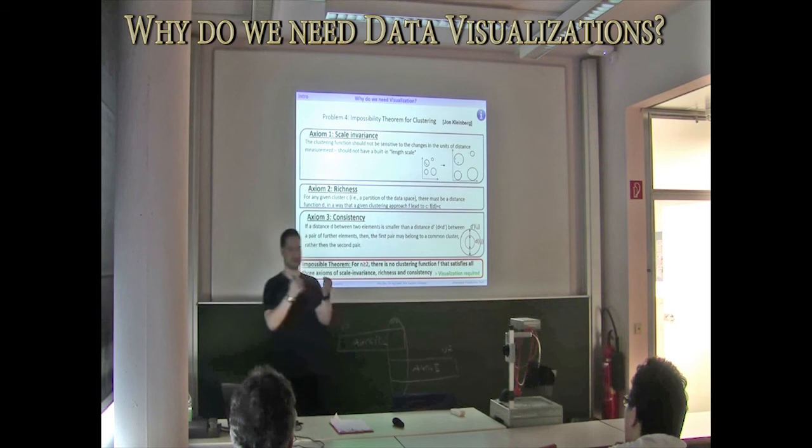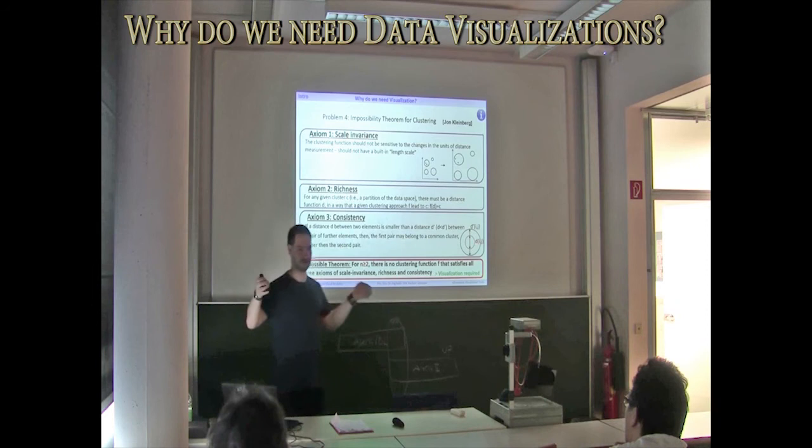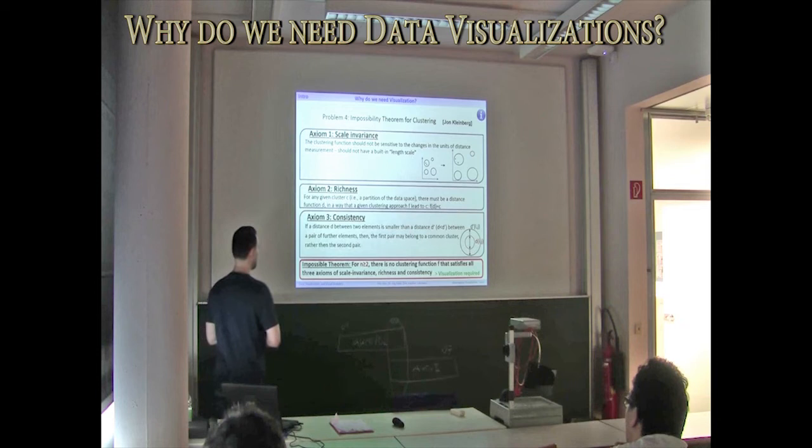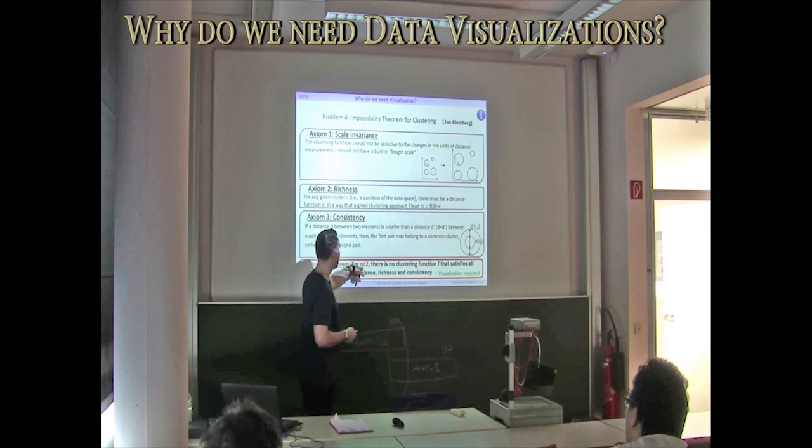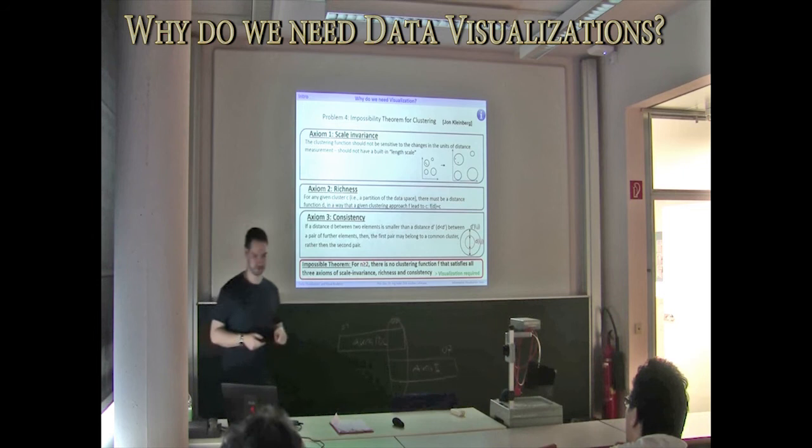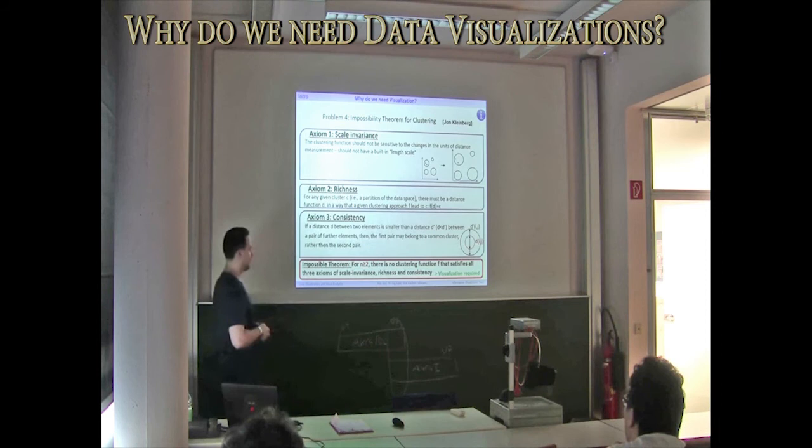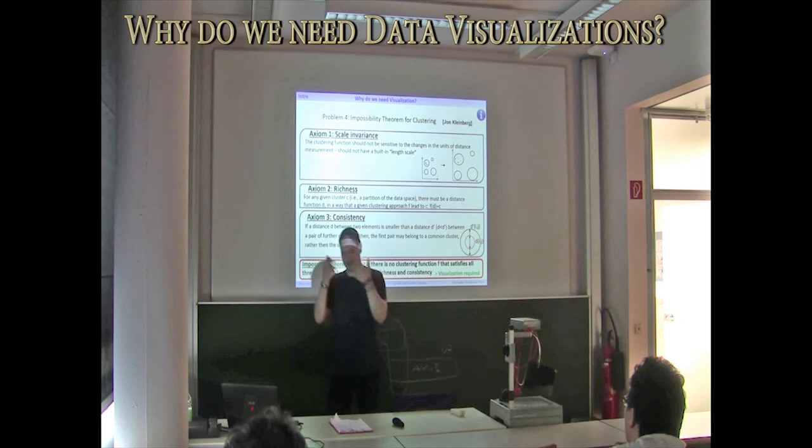Consistency means items that have a smaller distance should belong to the same cluster more likely than items which have a large distance. This is the impossibility theorem because it tells us that for data which have more than two dimensions, which is most of what we're talking about, there is no clustering function F that satisfies all three axioms of scale invariance, richness, and consistency.